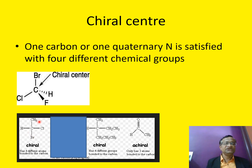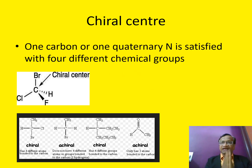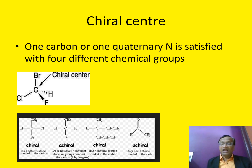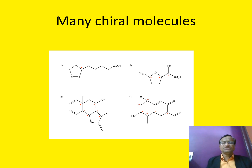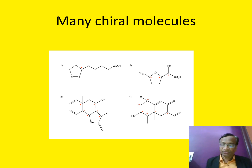If a carbon has, say, bromine, hydrogen, methyl, and Cl but two of those groups are the same — like two H atoms — then it is not chiral. One carbon or one quaternary nitrogen satisfied with four different chemical groups is what is called chiral. Sometimes one molecule can have many chiral carbons — for example, one molecule may have three or even six chiral centers.